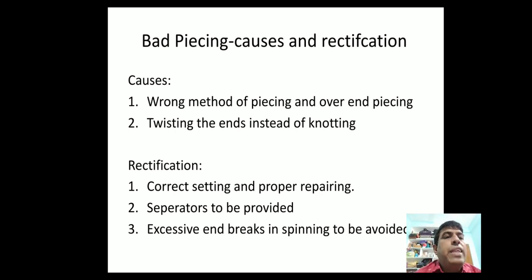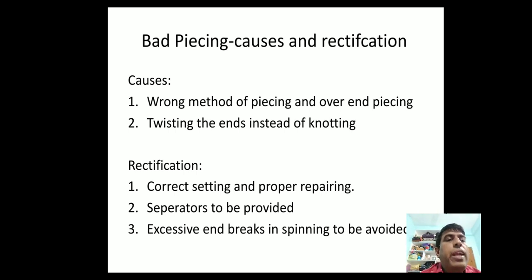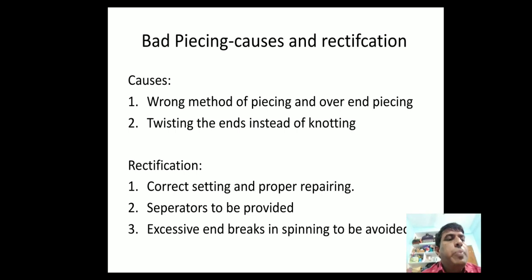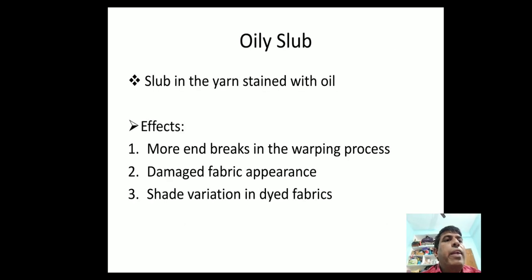Rectification for bad piecing: correct setting and proper repairing. Separators are to be provided, and excessive end breaks in spinning are to be avoided. Oily slub is a slub in the yarn stained with oil — generally a slub base which is oily.